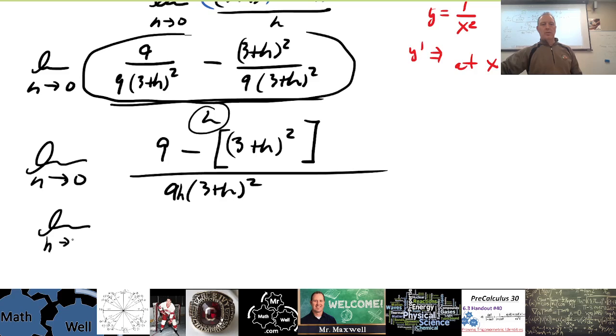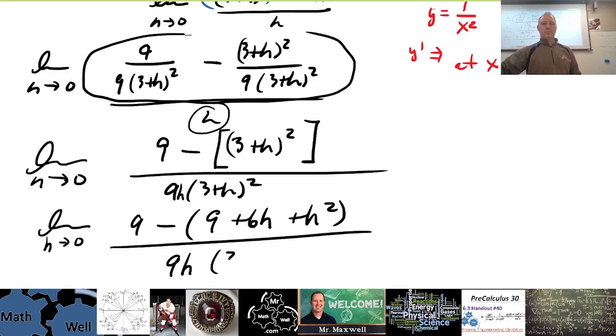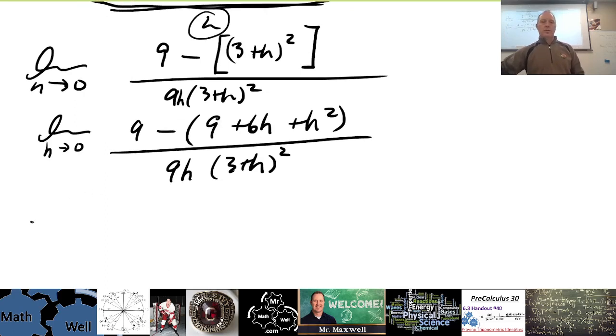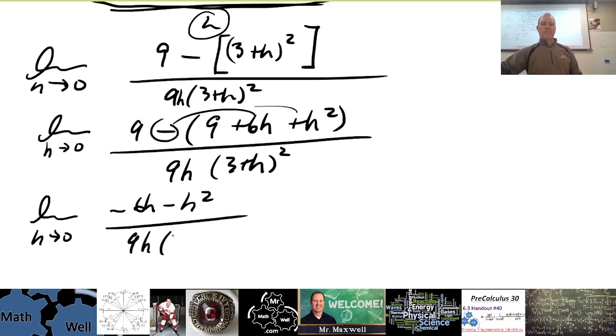Now, what I want to do is I want to expand this and gather all like terms, and then see if we can factor an h out of the top. So this is h approaches 0. This is going to be 9 minus, this is going to be 9 plus 6h plus h squared. Gathering like terms here. So we have 9 minus 9, so the 9s are gone.